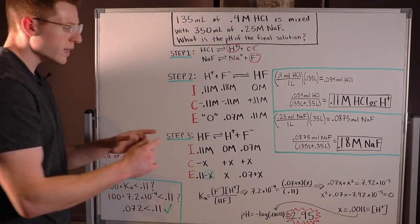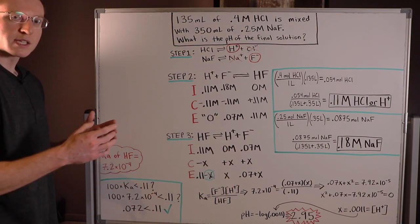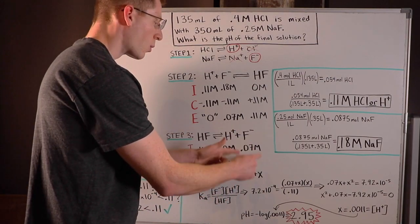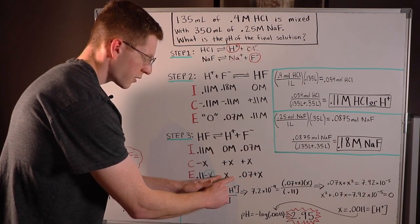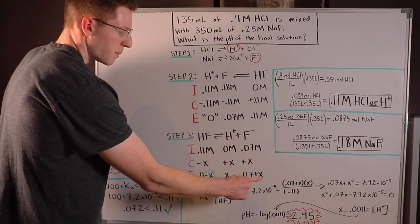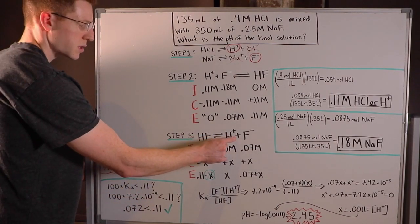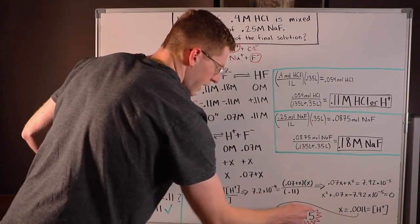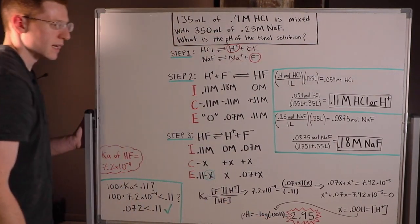So really all we care about in step three is the H plus here. If we had been dealing with a base, we would probably be caring about just an OH minus. But the H plus is really going to be the driver for determining the pH of this final solution. The F minus pales in comparison to determining the pH relative to this H plus. So again, we found that X, plugged it into pH equals negative log of the H plus concentration, and found our pH.